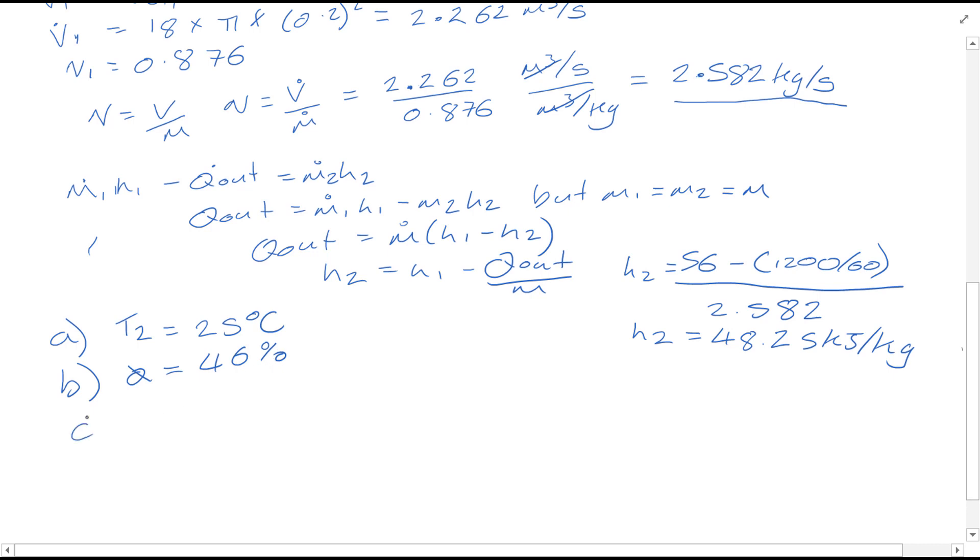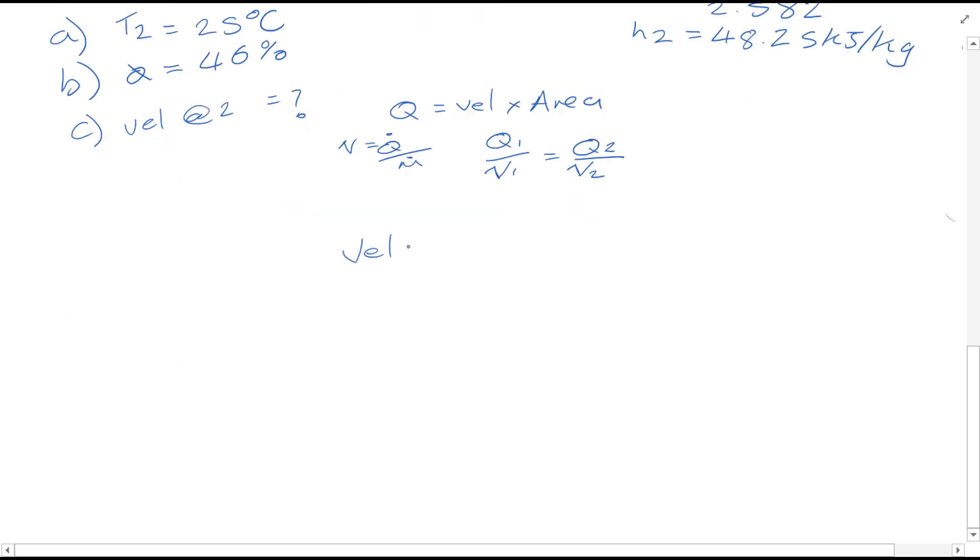What's only left to find here is the velocity at 2. We can use a similar technique because we know Q is equal to the velocity times area as we previously did, and we know specific volume is equal to the volume flow rate over the mass flow rate. We previously found the mass flow rate.